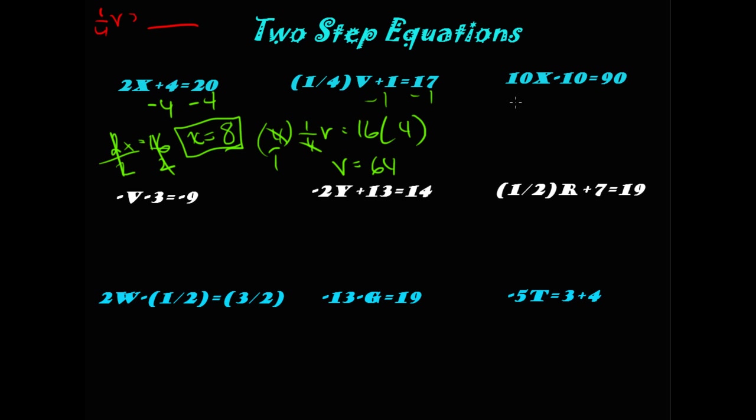10x minus 10 equals 90. What do we do first? Add the 10 to each side. See how easy this is? You get 10x is equal to 100. Divide each side by 10 and you get x is equal to 10. Well, let's see if it makes sense. 10 times 10 is 100. 100 minus 10 is 90. True.